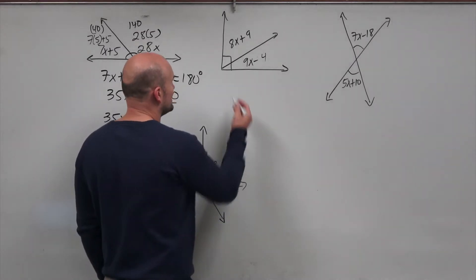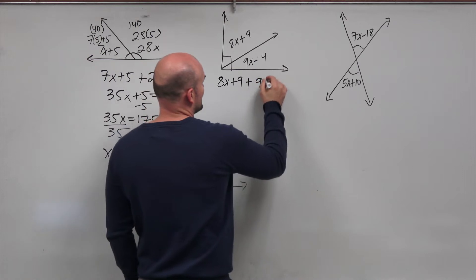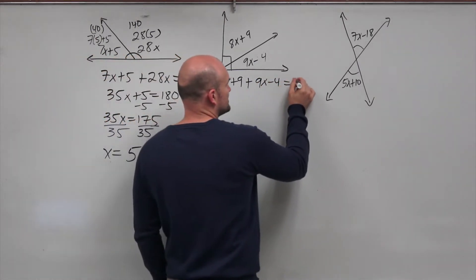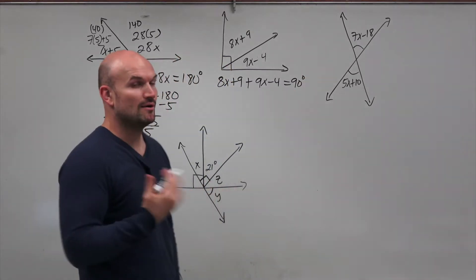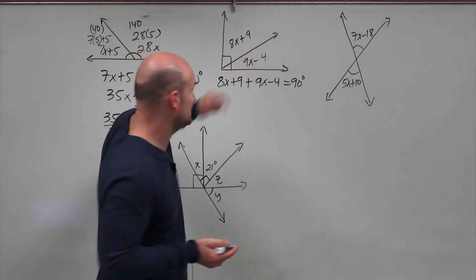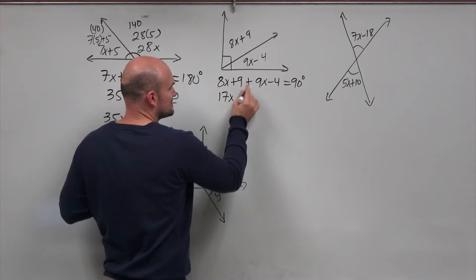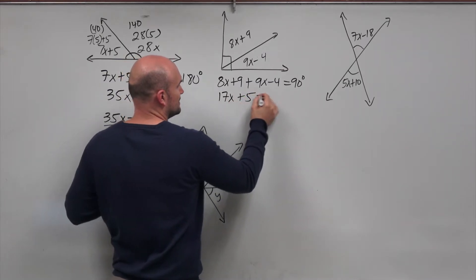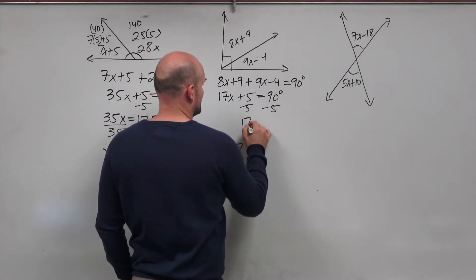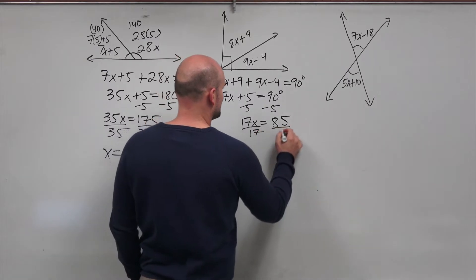I can write another equation: 8x + 9 + 9x - 4. These don't add to 180 like our linear pair — these add to 90 degrees. Combining like terms gives me 17x + 5 = 90 degrees. Subtract 5 from both sides and I get 17x = 85, then divide by 17.